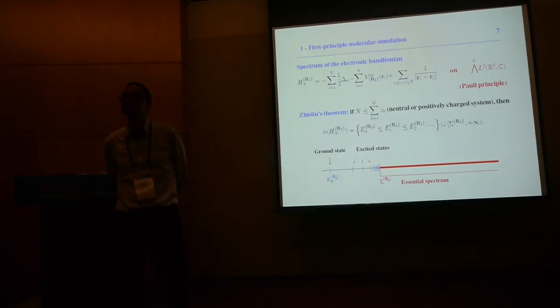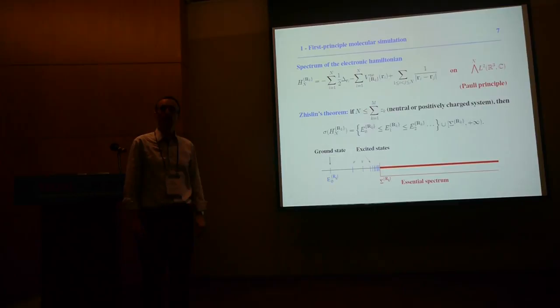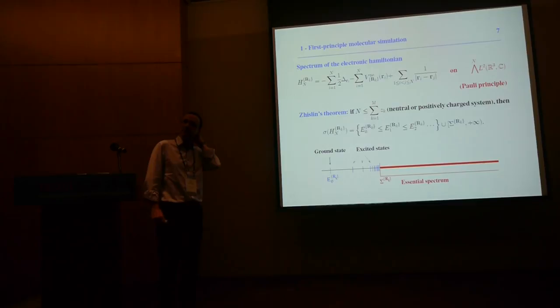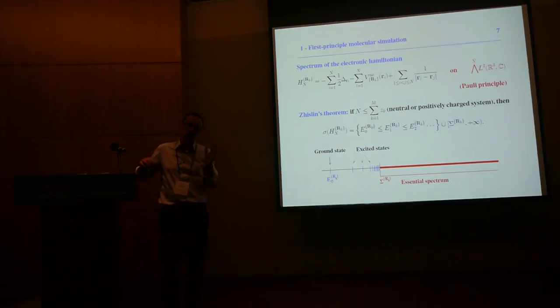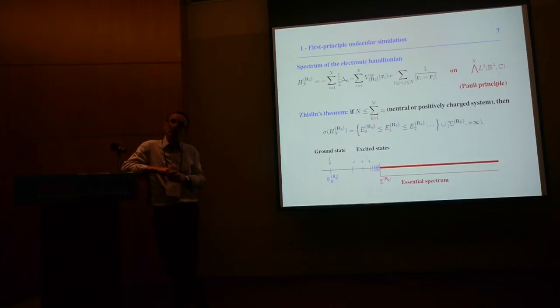When you do random dislocations, do you observe something like Anderson localization? Even for point defects with these interacting models, it's not clear that you have the same kind of Anderson localization for Kohn-Sham models as for non-interacting models. We ran a few simulations on model problems, and numerically it was not clear that the same kind of Anderson localization occurs for Kohn-Sham models. It's probably very interesting.